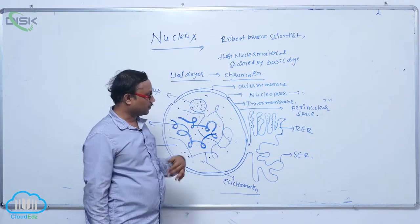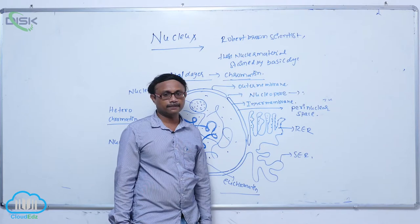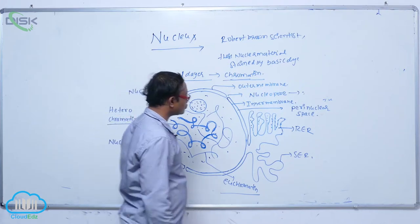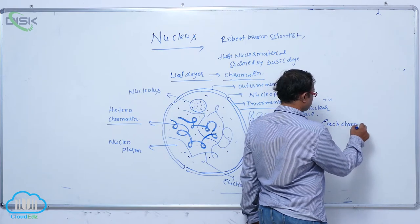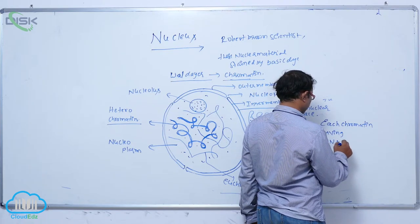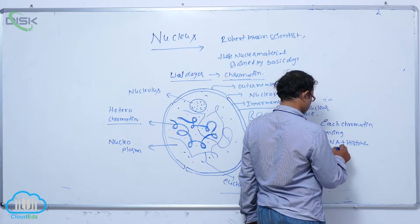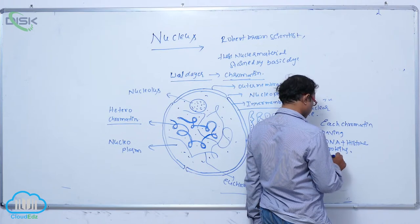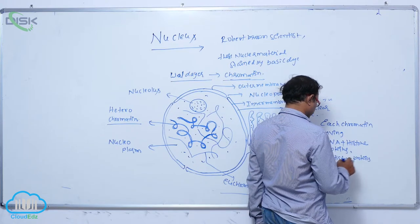These chromatin fibers are further coiled and condensed to form chromosomes. Each chromatin contains DNA plus histone proteins, non-histone proteins, and some amount of RNA.